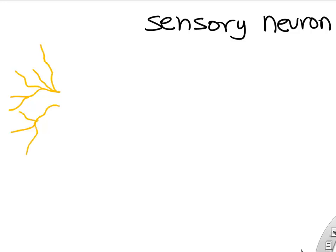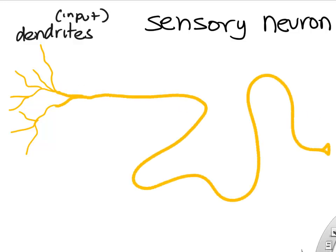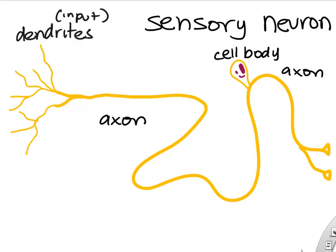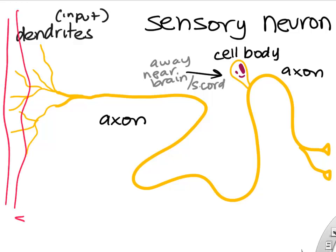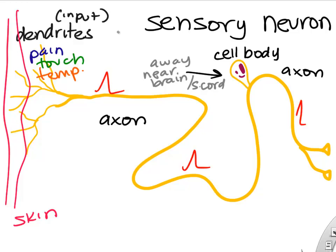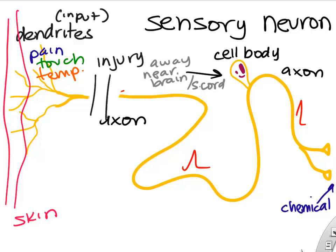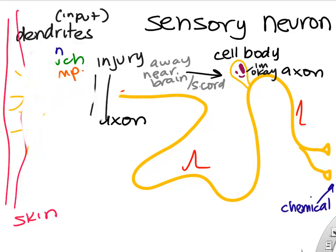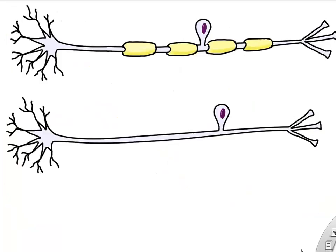Sensory neurons are a little different. They have dendrites and a long axon, but the cell body is positioned off to the side of the axon, far away from the dendrites. The dendrites detecting temperature, touch, or pain are located near the skin or organs, while the cell body is closer to the spinal cord or brain. One way to think about it is that this placement is protective — if the neuron is injured, it's injured far from the cell body, so it may be able to regenerate.